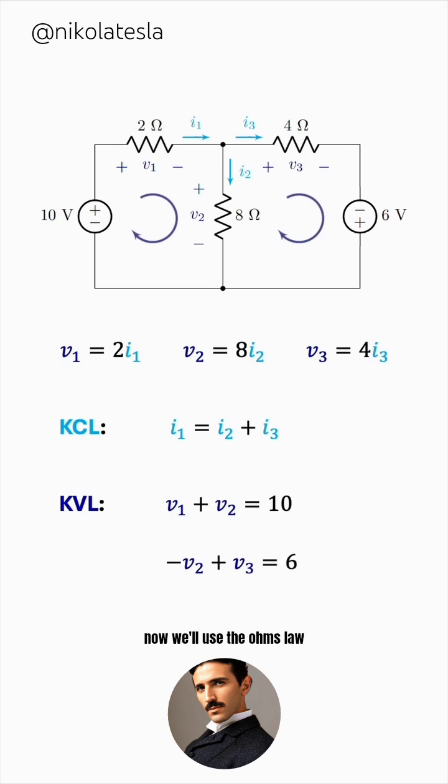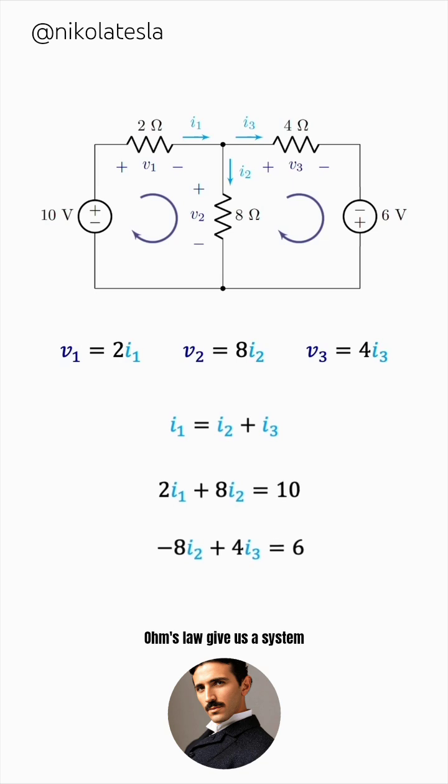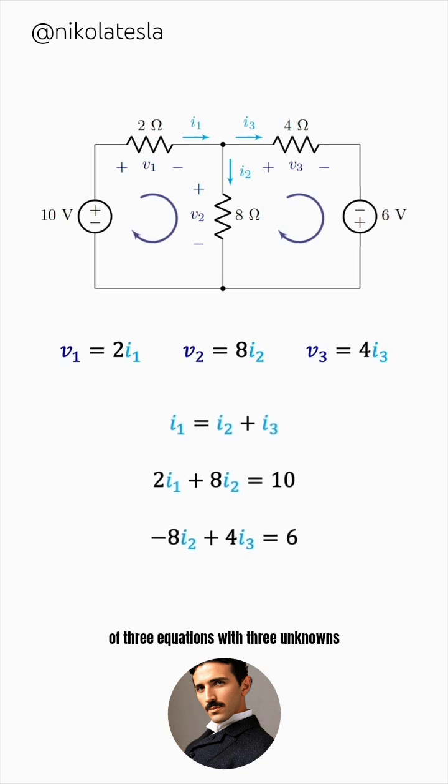And now we'll use the Ohm's law equations to express the three voltages in terms of their currents. So, KCL and KVL, coupled with Ohm's law, give us a system of three equations with three unknowns.